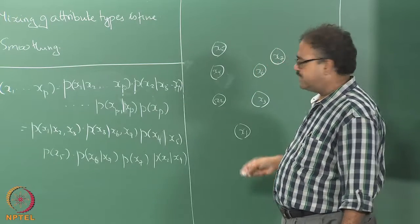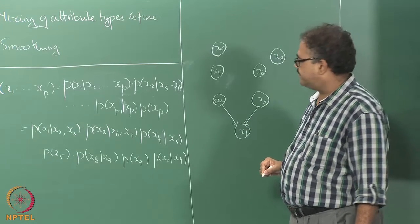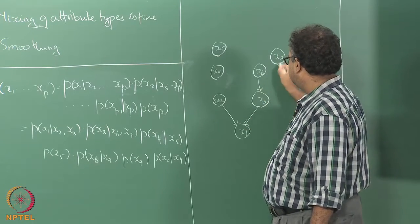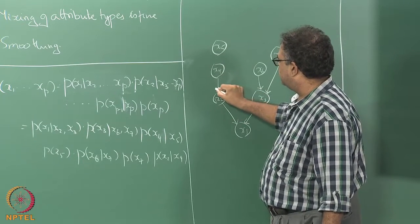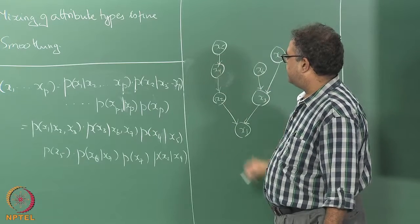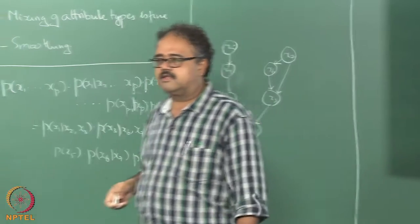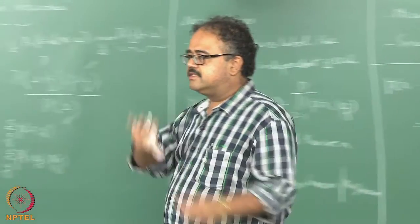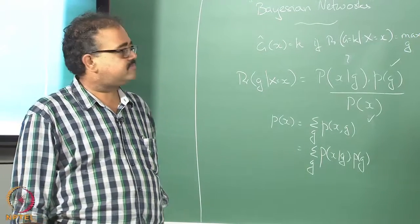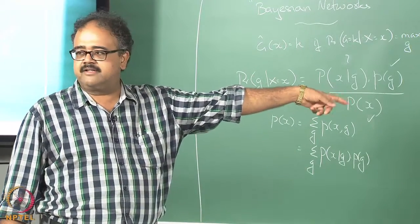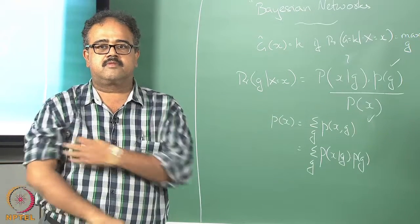x1 depends on x2 and x3, so I will put arrows. x3 depends on x6 and x7. x2 depends on x4. x4 depends on x5, and x6 depends on x7. This graph structure gives me the dependency or conditional independence relations I wrote in that expression.